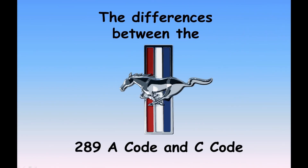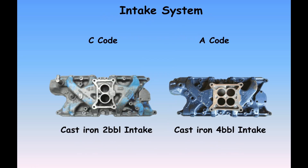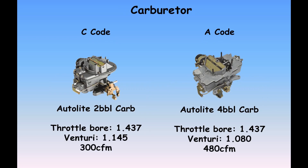Let's look at the differences between the A-code and the C-code in the famous 289 used in the '64 and a half through '67 and into '68 Mustangs. First of all, we've got a two-barrel versus a four-barrel engine. Here on the left we show the two-barrel cast iron intake used on the C-code; on the right, the four-barrel cast iron intake used on the A-code. The carburetors that sit on top of those manifolds are also slightly different — obviously the four-barrel has two extra barrels.